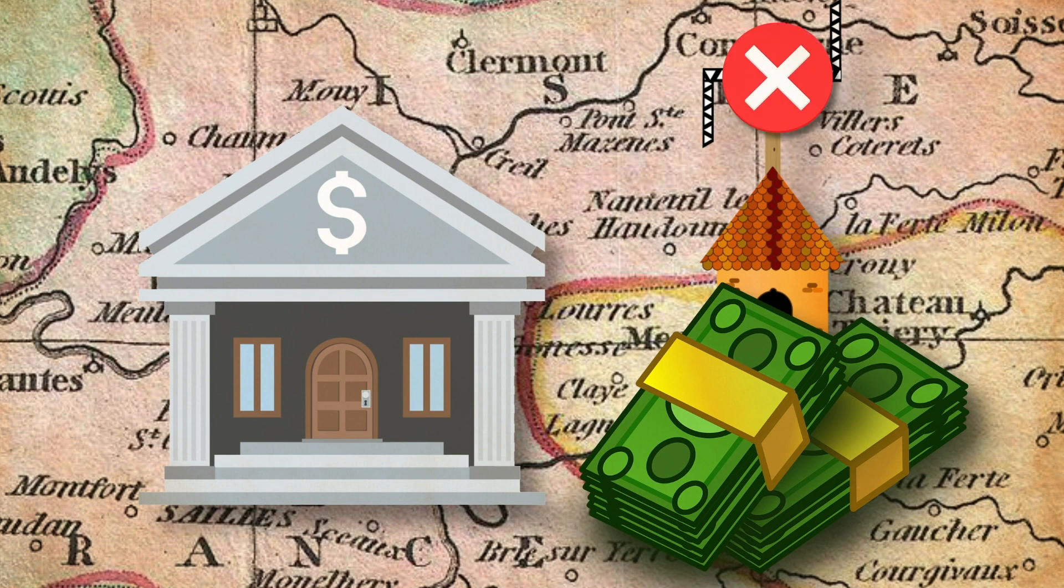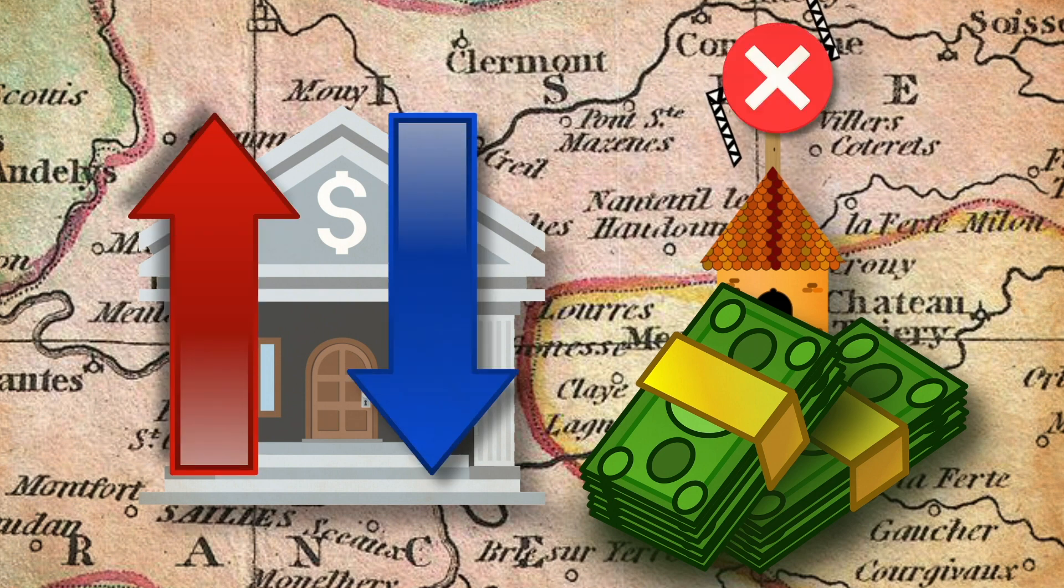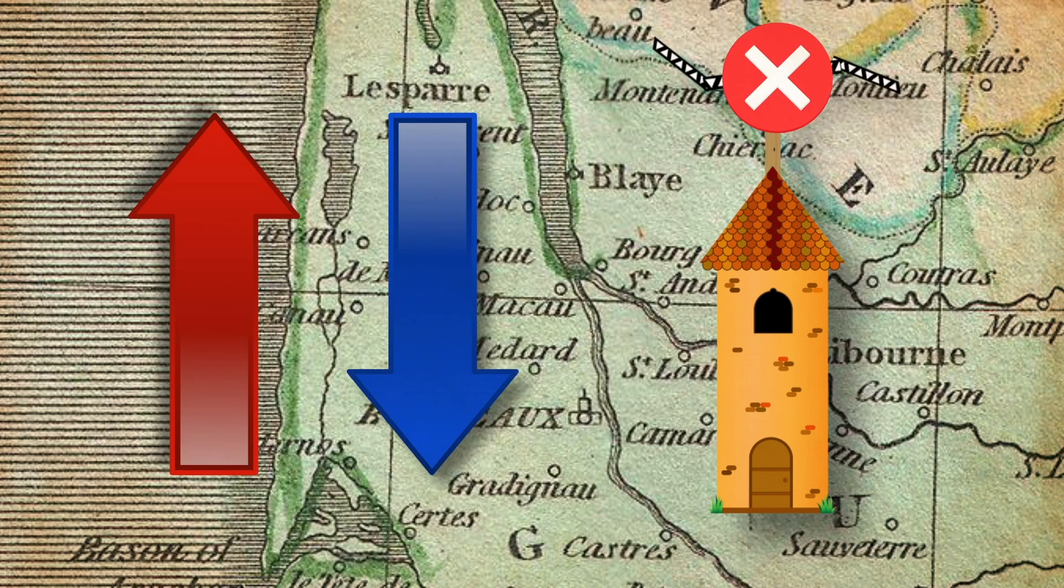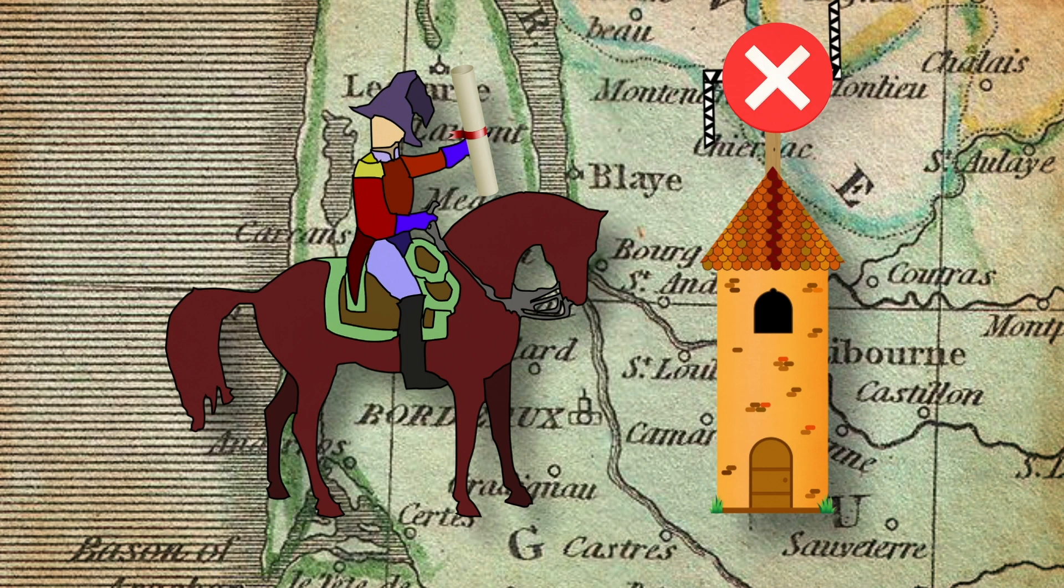Depending on the nature of the error, they could covertly indicate whether the stock market was up or down. A co-conspirator down the line would then know whether to sell or buy stocks, while everybody else was still waiting for their papers to arrive.